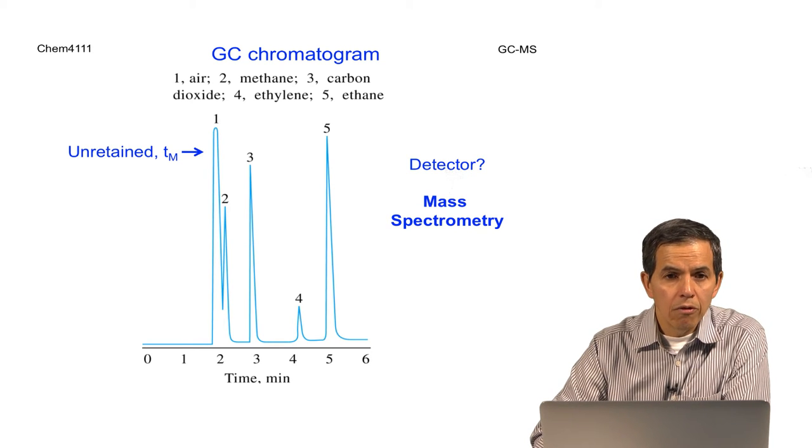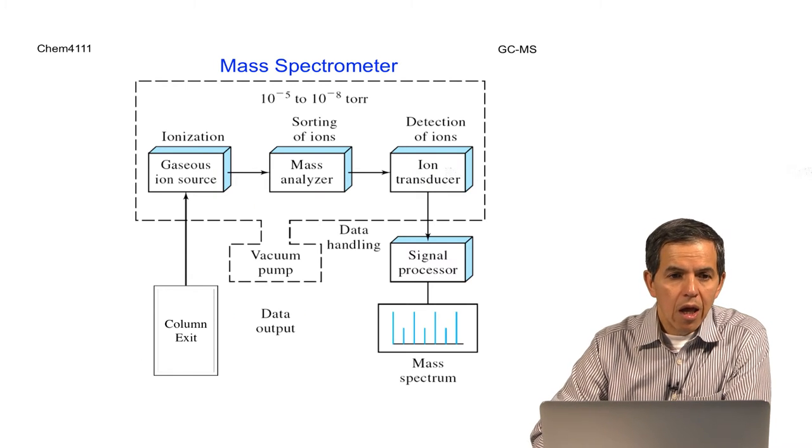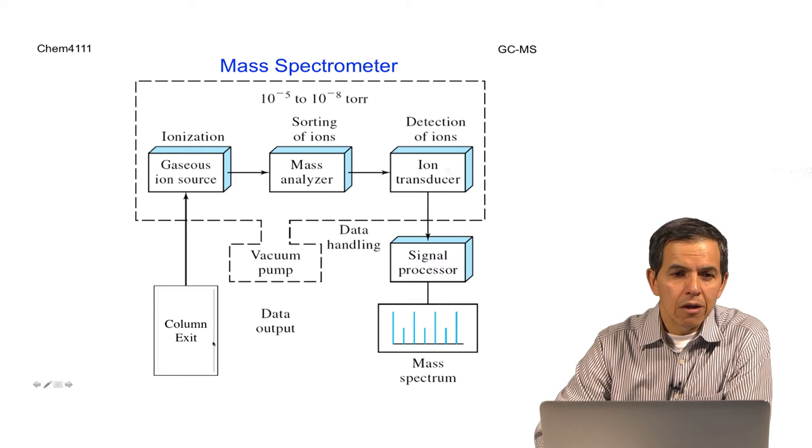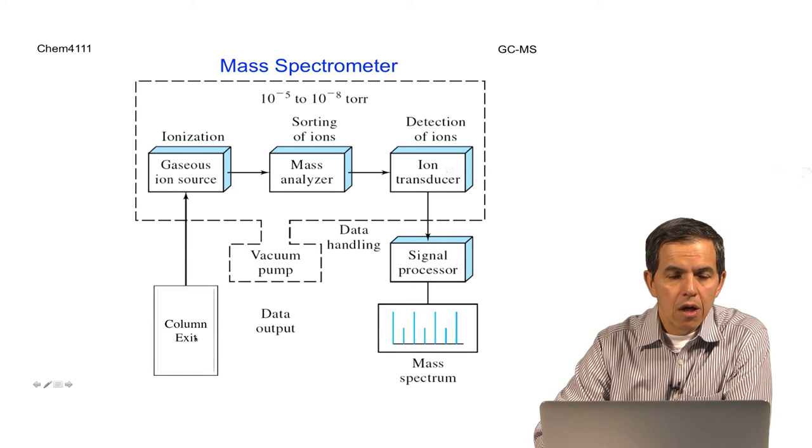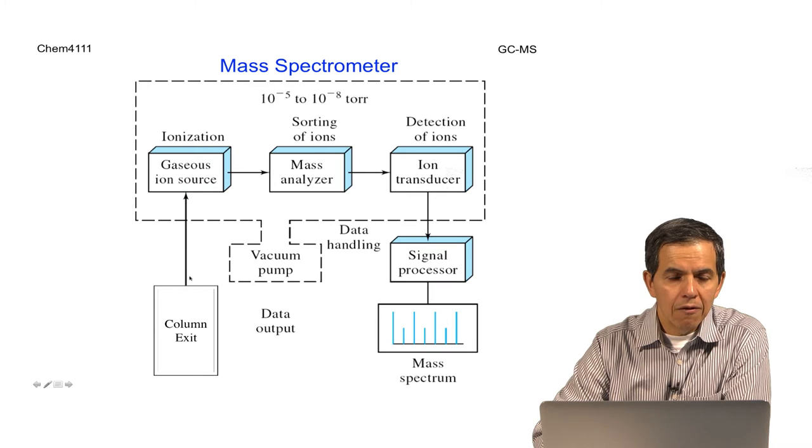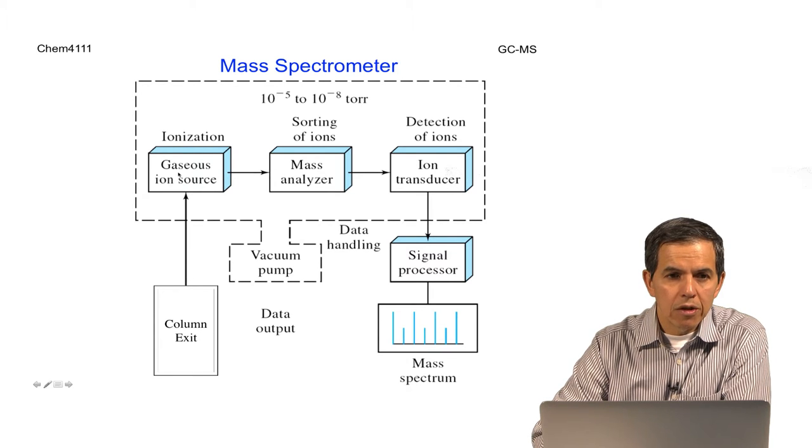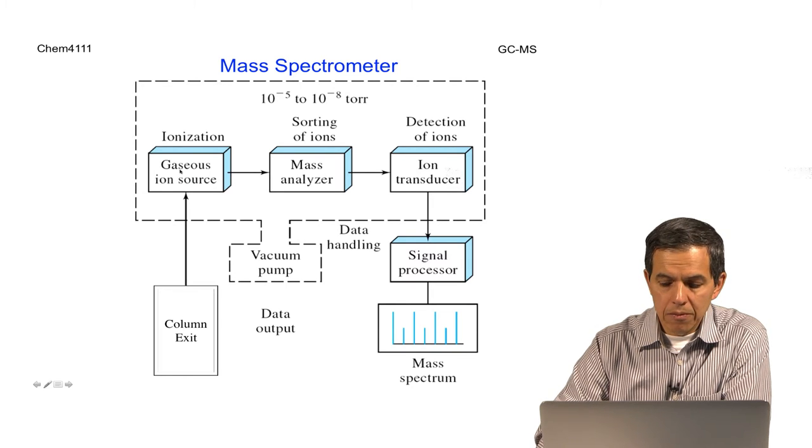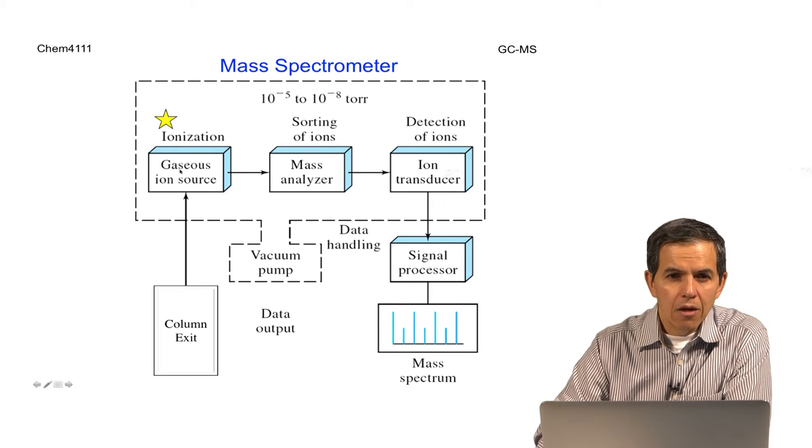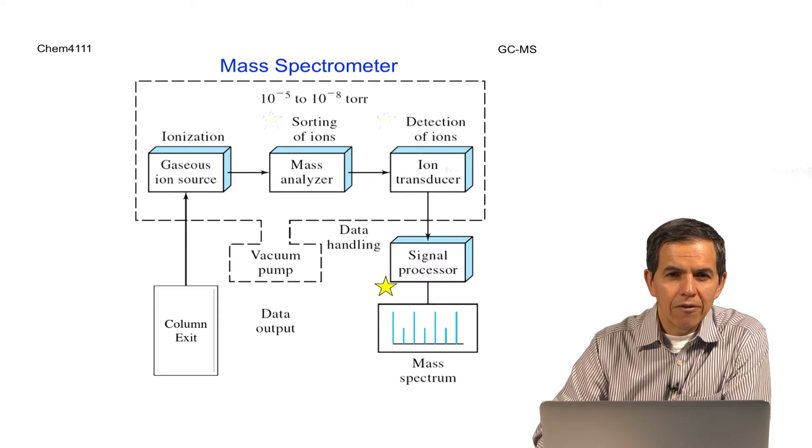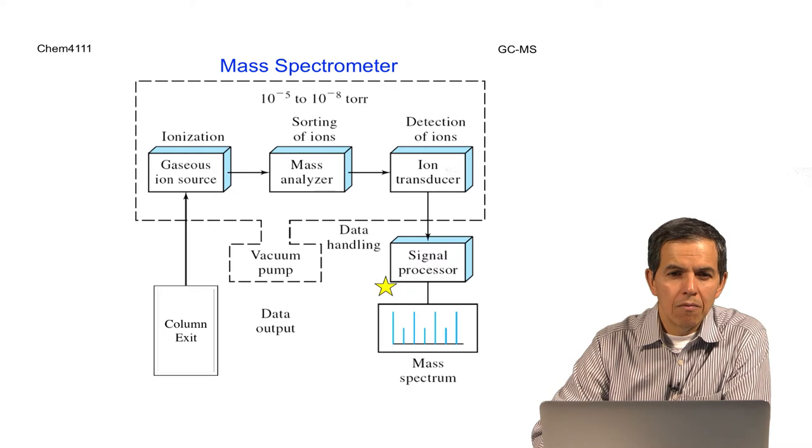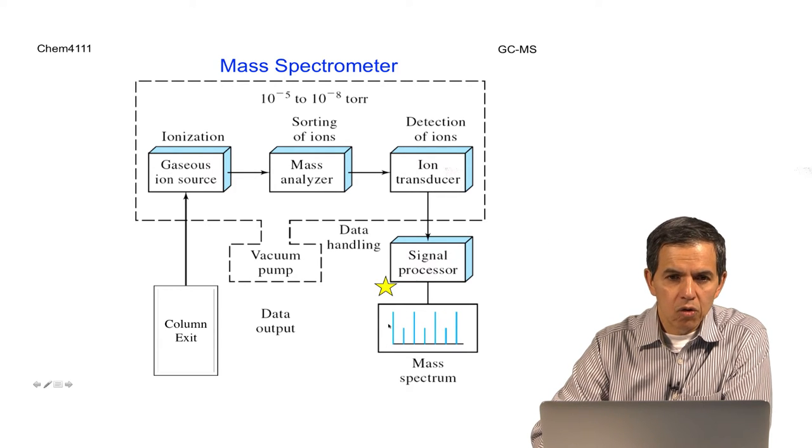Now we will focus on a mass spectrometer. A mass spectrometer needs to be connected to the exit of the column, in which we will have the ability to form compounds in the gas phase, which are already coming from the column, ionize them, then sort them in a mass analyzer, and after detection, produce a mass spectrum.